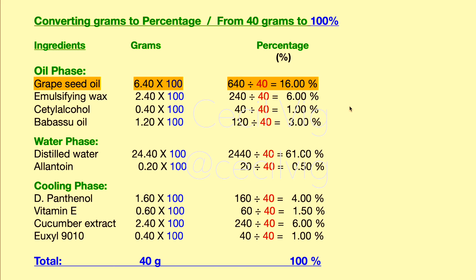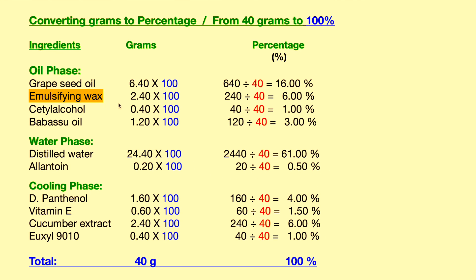I will present another example with the emulsifier. Here we multiply 2.4 by 100, which gives us 240. Then we divide 240 by 40, and the answer is 6. So the percentage of emulsifier is 6 percent.